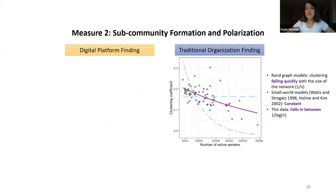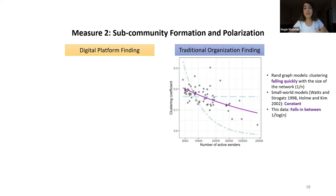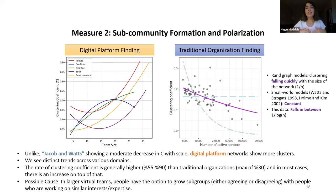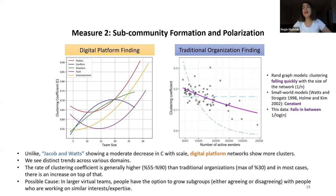The second measure is sub-community formation. In traditional findings and previous network science settings, whenever a network grows in size, there are fewer clusters. But in Wikipedia, interestingly, the clustering coefficient was much higher than in traditional settings, and the number of clusters also grows as the network grows in size — meaning there are more sub-communities even when the network is much bigger.